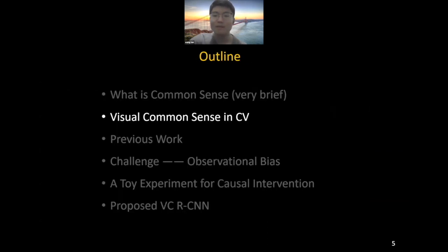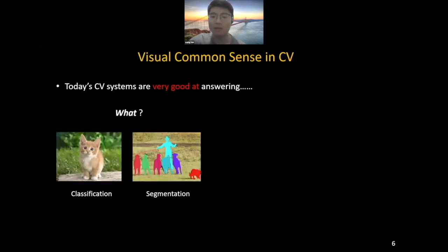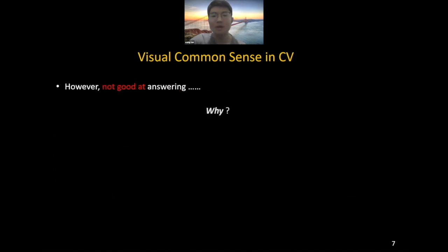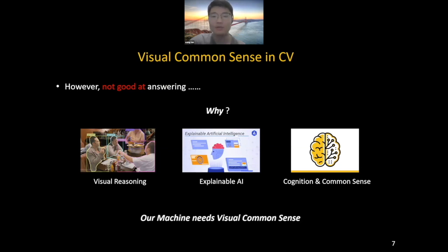What is visual common sense in our CV community? Today's CV systems are very good at answering 'what' — for example, classification and segmentation — and 'where' — for example, detection and tracking. However, they are not good at answering 'why', which means asking for visual reasoning and high-level common sense reasons behind the machine's decisions. Our machines need visual common sense to learn to answer why.